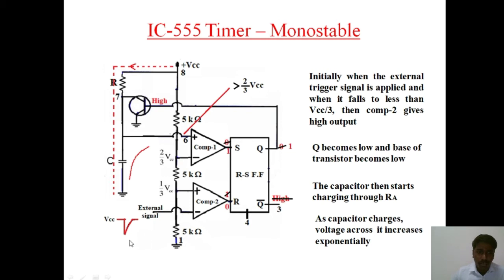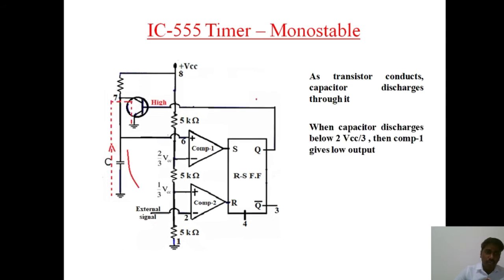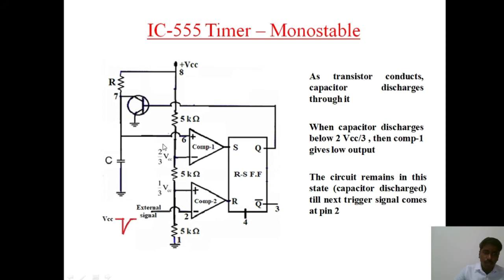At the same time comparator 2 gives low output, because the low voltage pulse has gone and the pulse is now high. So comparator 1 gives high output, Q becomes 1, and the base of the transistor becomes high. As the base becomes high, the base-emitter junction is forward biased and the transistor starts conducting. As the transistor conducts, the capacitor gets a path to discharge through the transistor. As the capacitor discharges, the voltage decreases down to 0 V. Now comparator 1 gives low output and comparator 2 also gives low output. The circuit remains in this state until the next trigger input signal comes.